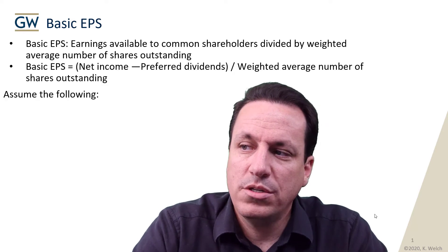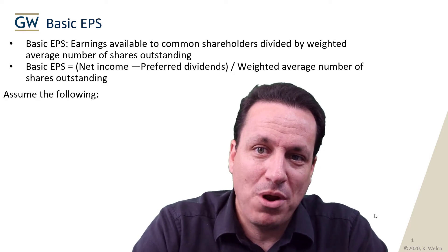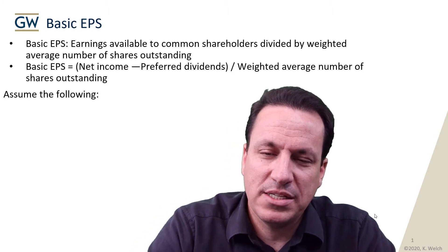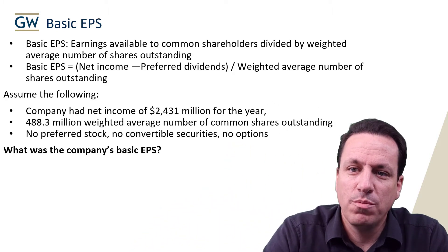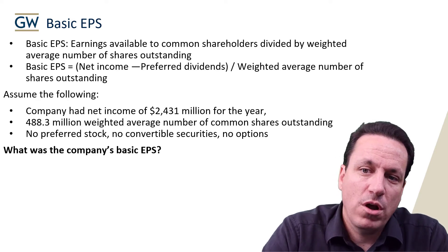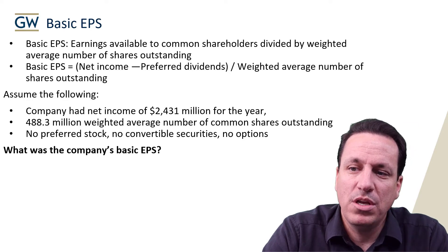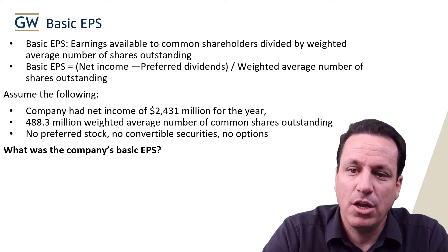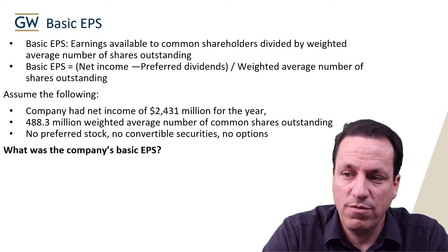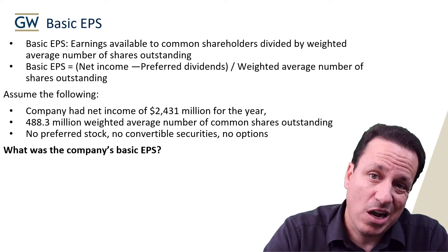These terms will mean more as we do more of these problems. But we'll go through this basic example first. Assume the following: the company had a net income of $2,431 million for the year, $488.3 million weighted average number of common shares outstanding, no preferred stock, no convertible securities, and no stock options.